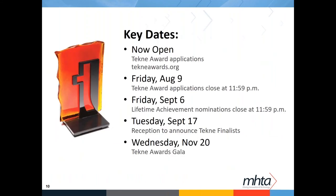Key dates for the Techie Awards: applications are open right now and will be open until August 9th, closing at the end of the day. September 6th is the deadline for Lifetime Achievement nominations. On Tuesday, September 17th, the judges will have finalized their thoughts on who should be finalists in each category, and we will have a reception to announce those finalists — everyone who applies is invited to come and mingle. The actual award ceremony is November 20th, a Wednesday — that's our large Techie Awards Gala. We get between 700 and 800 attendees. There's a red carpet and it's a really fun event.